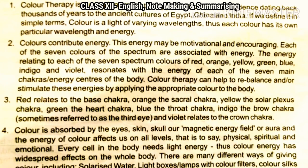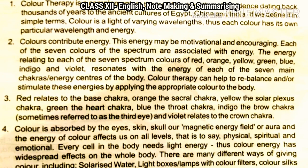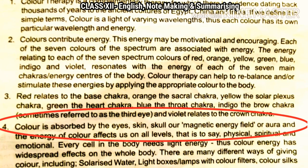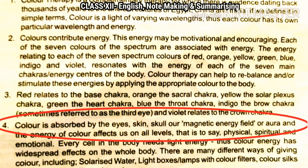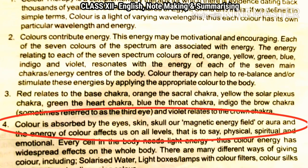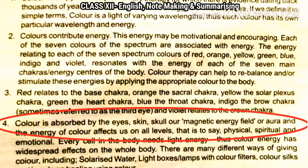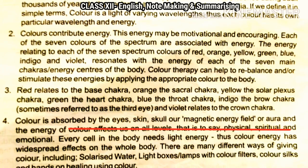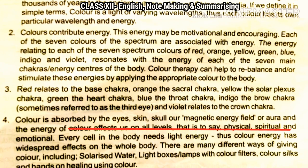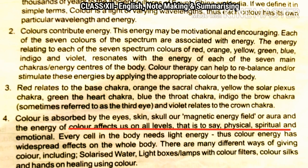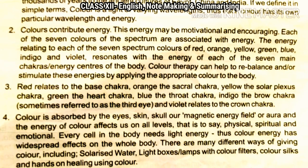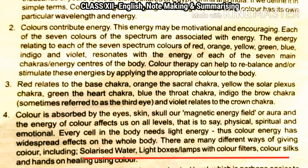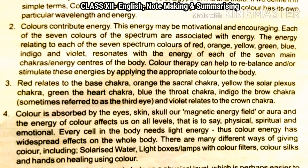The next paragraph, the fourth one, talks about the working or the effects of color. It says color is absorbed by the eyes, skin, skull, our magnetic energy field or aura, and the energy of color affects us on all levels — physical, spiritual, and emotional. Every cell in the body needs light energy, and thus color energy has widespread effects on the whole body. There are many different ways of giving color, including solarized water, light boxes, lamps with color filters, colored cells, and hands-on healing using color.